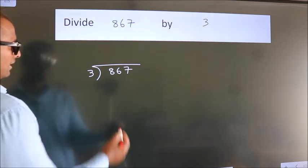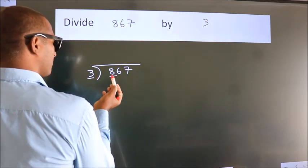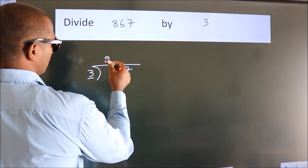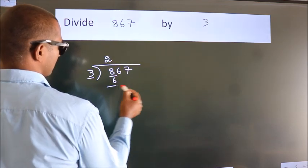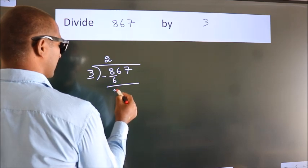Next. Here we have 8, here 3. A number close to 8 in the 3 table is 3 times 2, which is 6. Now we should subtract. We get 2.